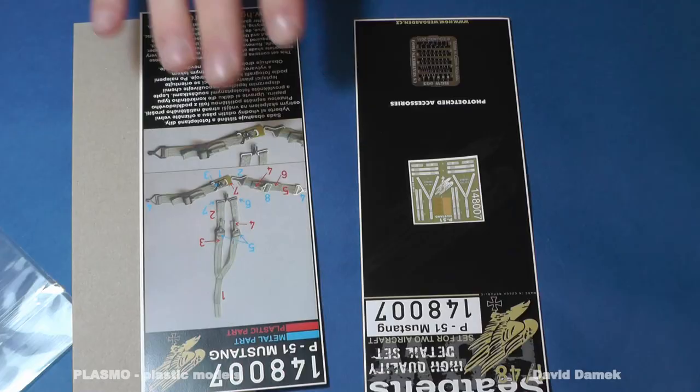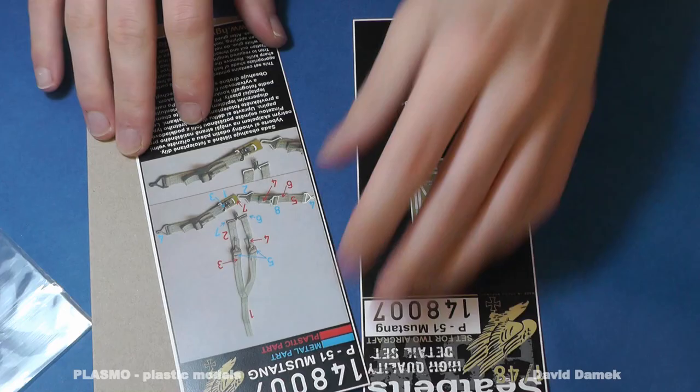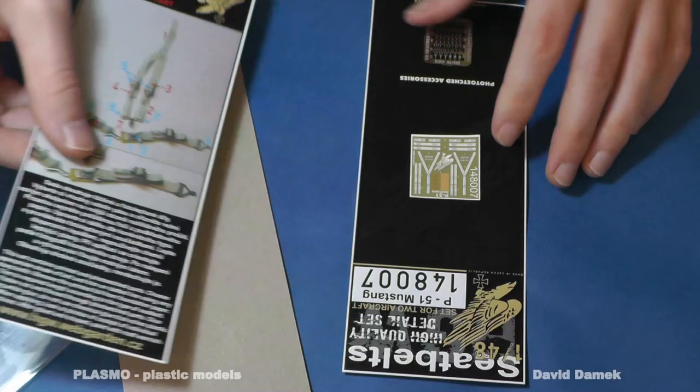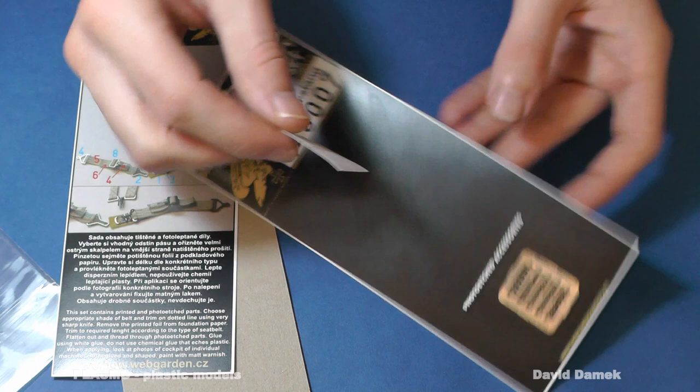I tried the new Superfabric seatbelts for the first time. It is crazy stuff. In 1:48 scale the belts are very tiny and you must thread straps through the buckles like real seatbelts. I have to agree that they look perfect but photo-etched seatbelts are much easier.